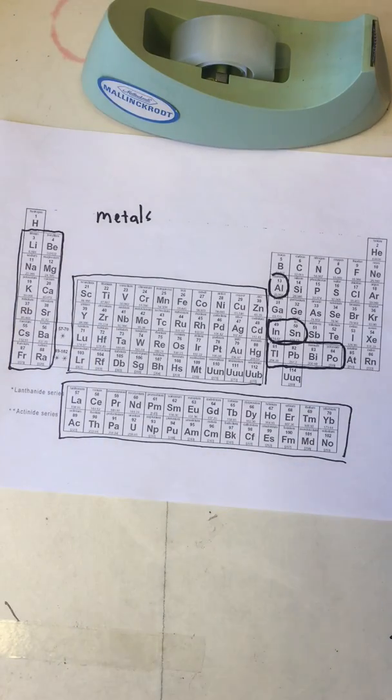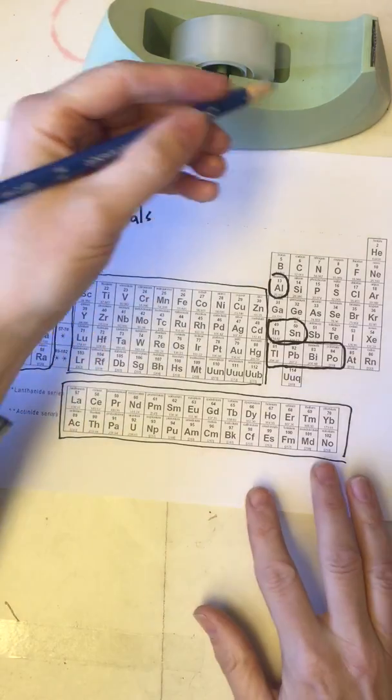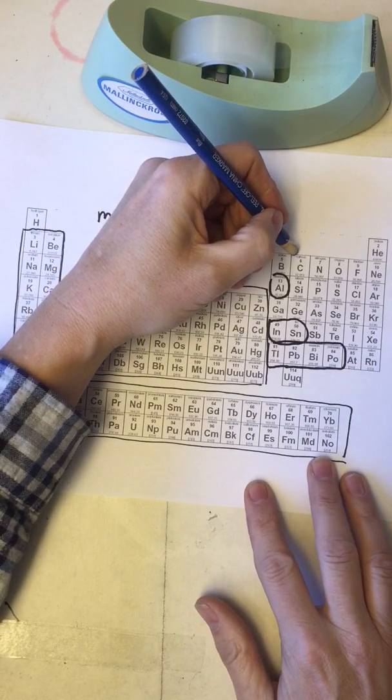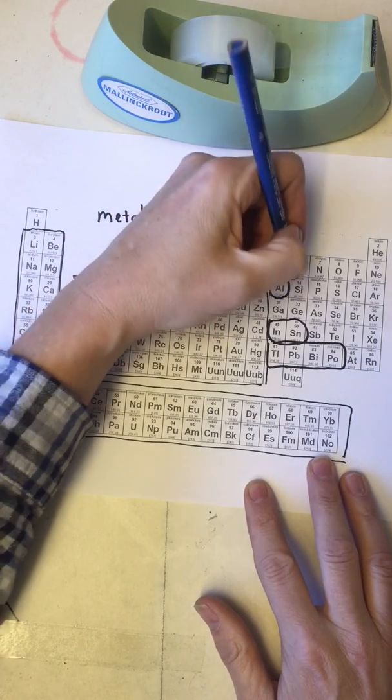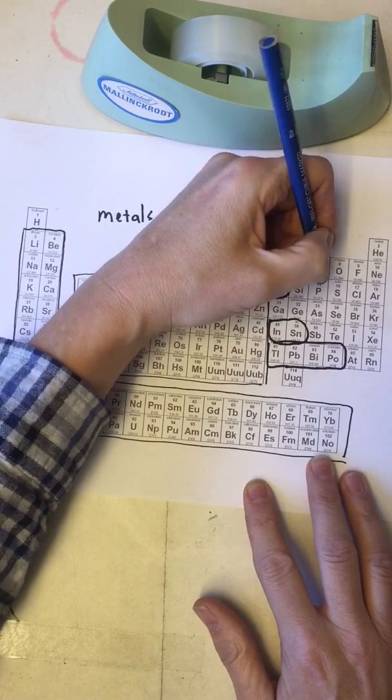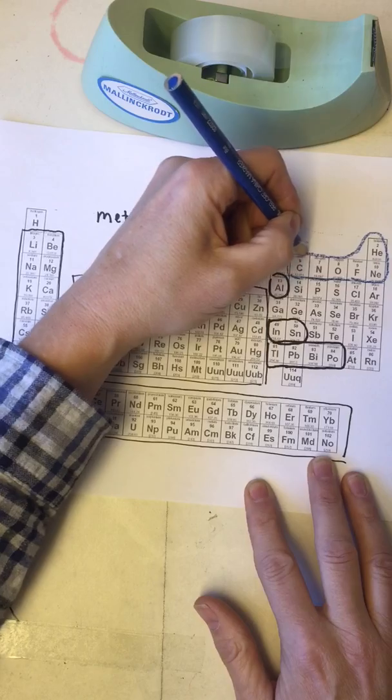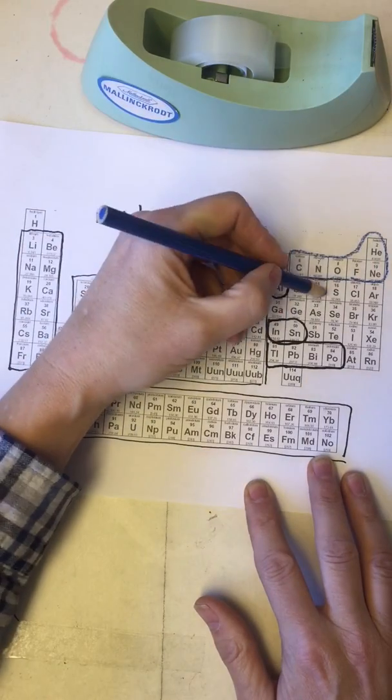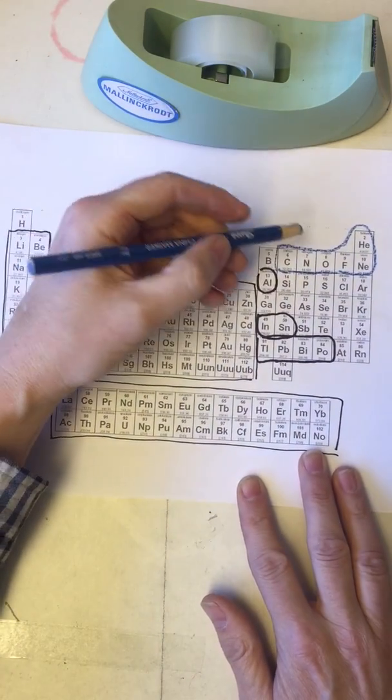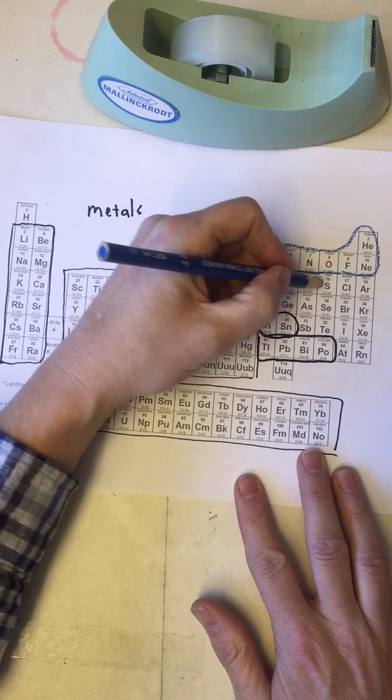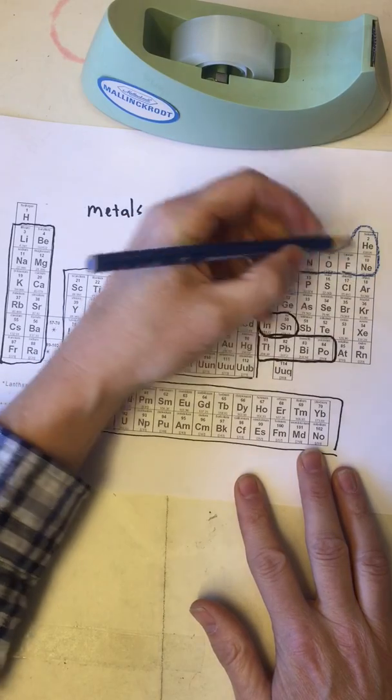Then there are the nonmetals which tend to be on the right side of the table. For example, carbon, nitrogen, oxygen, fluorine out here, as well as some of the others over here on the right side. Phosphorus, sulfur, chlorine, and argon.